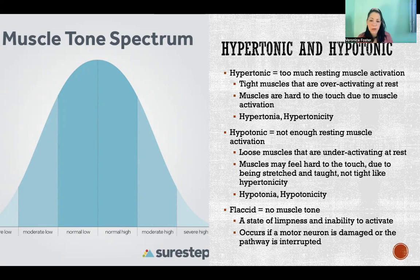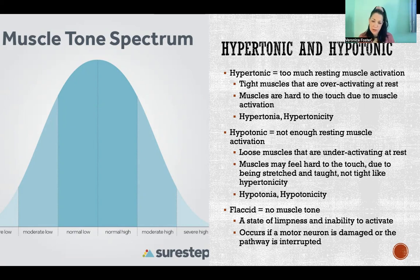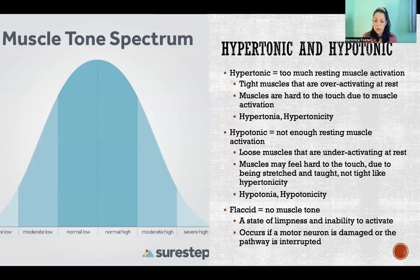Hypotonic is the exact opposite — that's where we don't have enough resting muscle activation. Our muscles are too loose and under-activating at rest. Interestingly, when you palpate these muscles, they still might feel somewhat hard to the touch, which can be confusing if you're assessing someone. But in this case, it's not because of muscle activation.